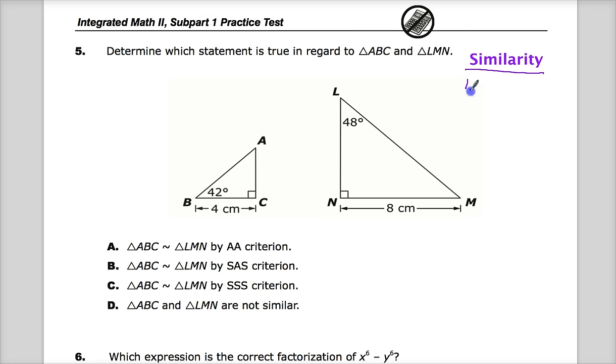Similarity has two parts. Corresponding angles are congruent, so there should be some match. And the second is that corresponding sides are proportional. I should be able to make a proportion with them.